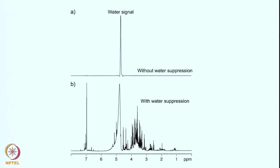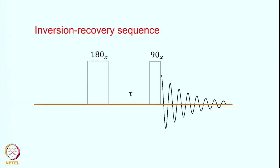This is the same spectrum shown in the previous slide, and this is the result with water suppression by pre-saturation. Here you see the water signal is substantially reduced, and you are able to see the other signals of the sample — this is a spectrum of a protein — and you are able to see those signals with good intensities. This is one technique to suppress the water.